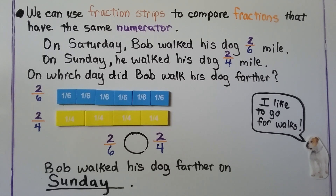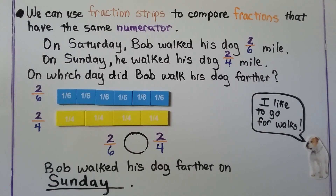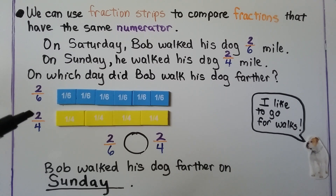We can use fraction strips to compare fractions that have the same numerator. On Saturday, Bob walked his dog two-sixths of a mile. On Sunday, he walked his dog two-fourths of a mile. On which day did Bob walk his dog farther? On Saturday he walked two-sixths; on Sunday he walked two-fourths.